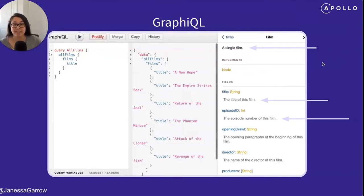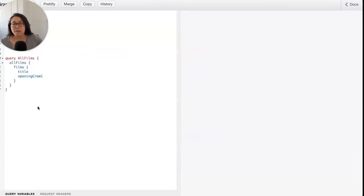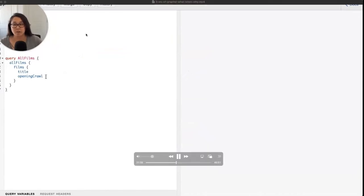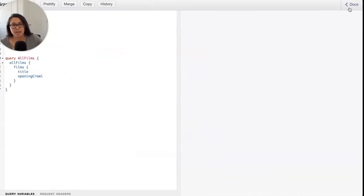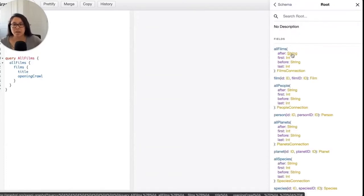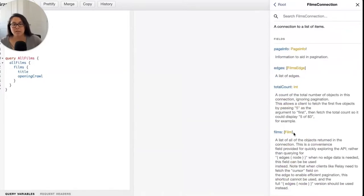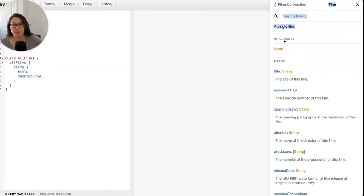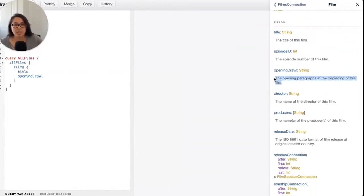So here we are in Graphical. We're using the Star Wars GraphQL API. And in our query, we're requesting all films. And for each film, we're going to get the title and the opening crawl. And on the right-hand side here, we can pull open the docs, which will pull open a clickable view of the schema. So we have our root query. We're requesting all films. And within all films, we're getting a list of films. And you can see there are these comment descriptions. And these are the comments from the actual schema itself. So the title field is the title of the film. And the opening crawl is those opening paragraphs at the beginning of this film. And then we can run our query and get our list of films. So as we can see, after we get our data, we have the title and that opening crawl.